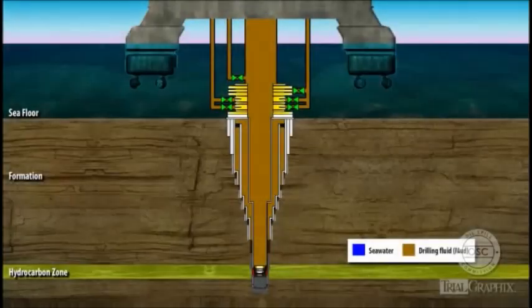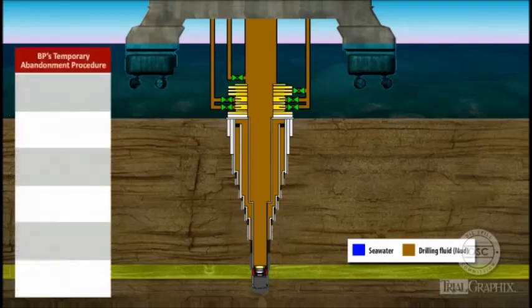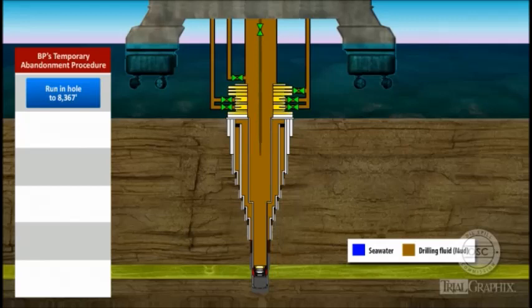BP's Temporary Abandonment procedure had the following basic sequence. 1. Run the drill pipe into the well to 8,367 feet, 3,300 feet below the mud line. 2. Displace 3,300 feet of mud in the well with seawater, pushing the mud up above the BOP and into the riser.